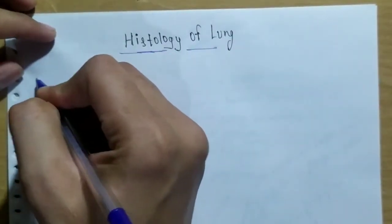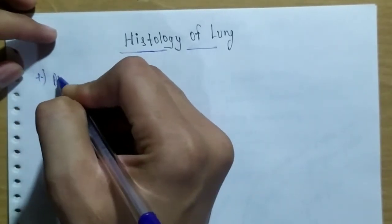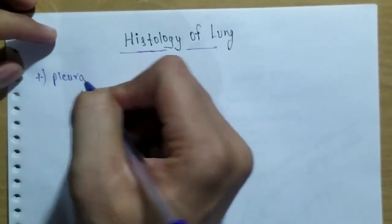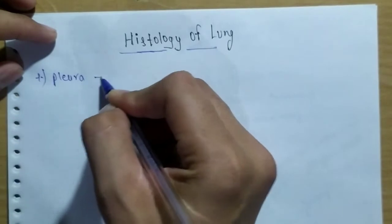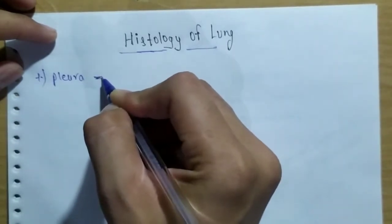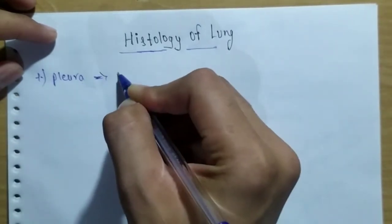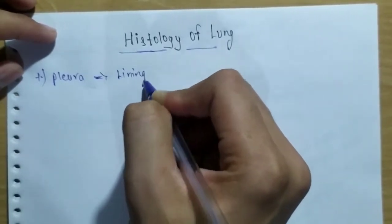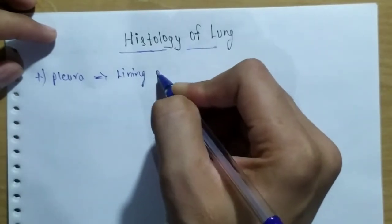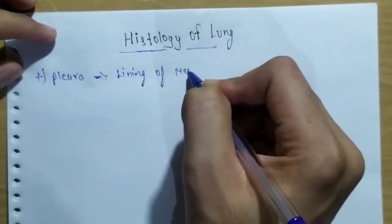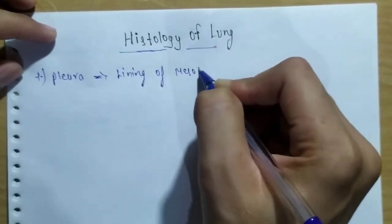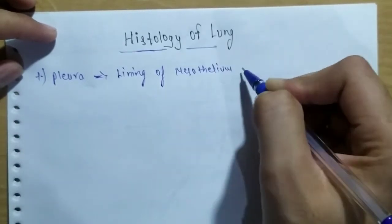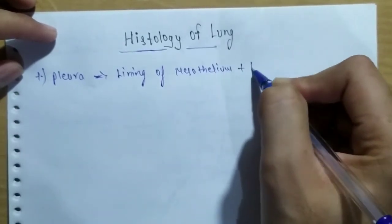The first topic is pleura. It is the covering of the lung. It consists of a lining of mesothelium and layers of connective tissue.